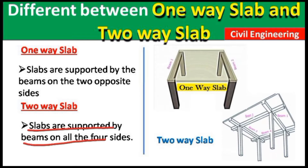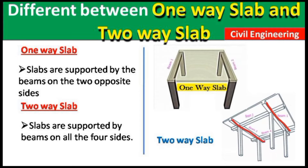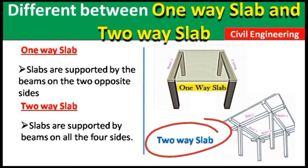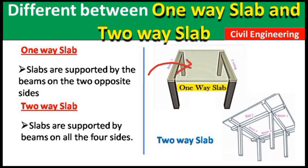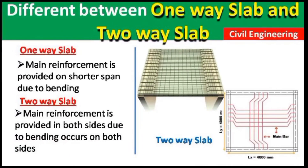In a two-way slab, the slab is supported by beams on all four sides. You can see here this slab is supported on this beam, this beam, this beam, and this beam — four beams supporting from all sides. So the first difference is: one-way slab is supported on two sides, two-way slab is supported on all four sides.